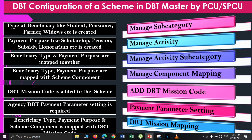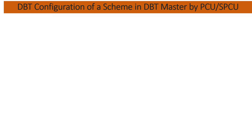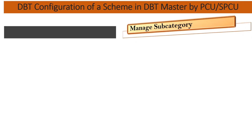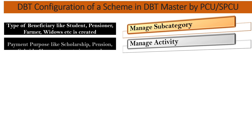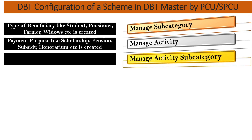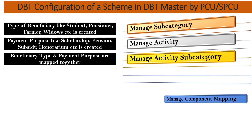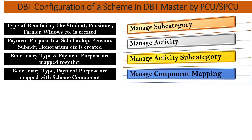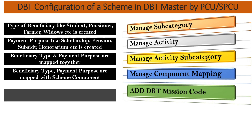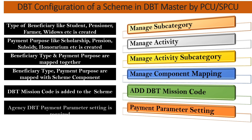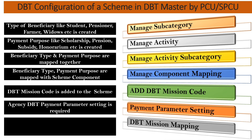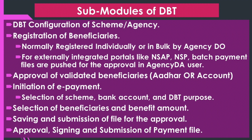In many schemes, multiple payment purposes or multiple beneficiary types are created. All of those beneficiary types are first created and then mapped to their corresponding payment purpose IDs, which are in turn mapped with their corresponding components of the scheme. The DBT mission code may be the same for all these components or different. After the DBT configuration has been completed, the agency users can make the beneficiary payments.